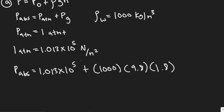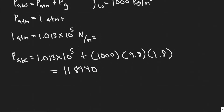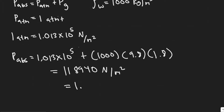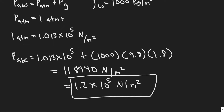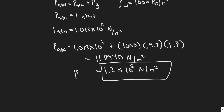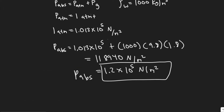Now we plug into the calculator: 1.013 times 10 to the 5, plus 1,000 times 9.8 times 1.8. When you do this you get 118,940, which is in newtons per meter squared. We can rewrite this as approximately 1.2 times 10 to the 5 newtons per meter squared — or pascals. This is your absolute pressure, which is half the answer to part A.